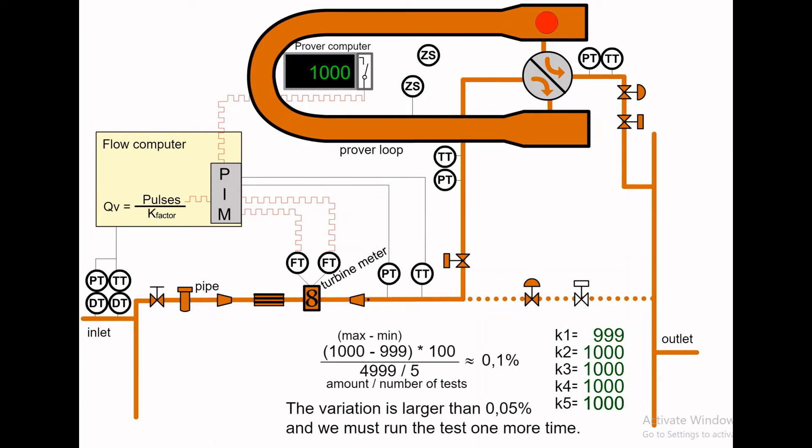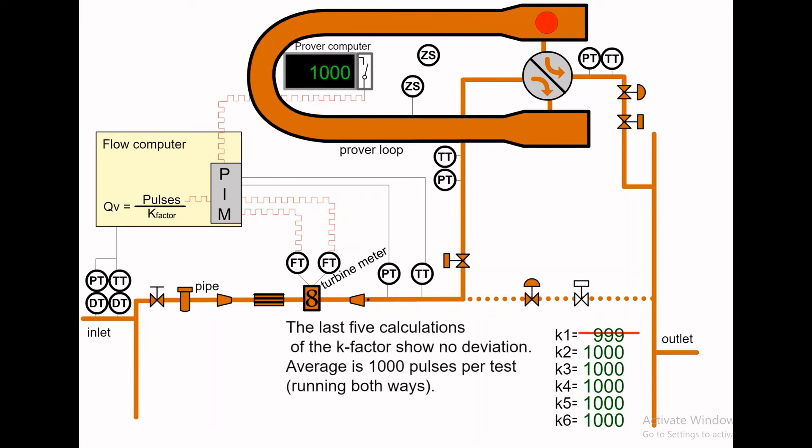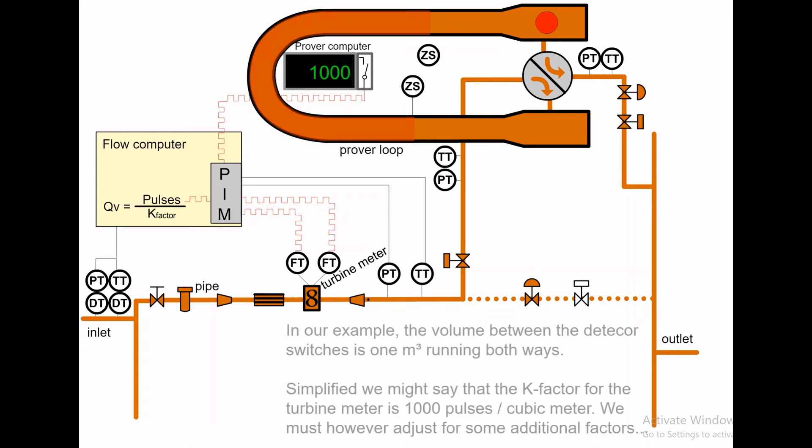The variation is larger than 0.05% and we must run the test one more time. The last five calculations of the k-factor show no deviation. The average is 1000 pulses per test, running both ways. In our example, the volume between the detector switches is one cubic meter running both ways. Simplified, we might say that the k-factor for the turbine meter is 1000 pulses per cubic meter.